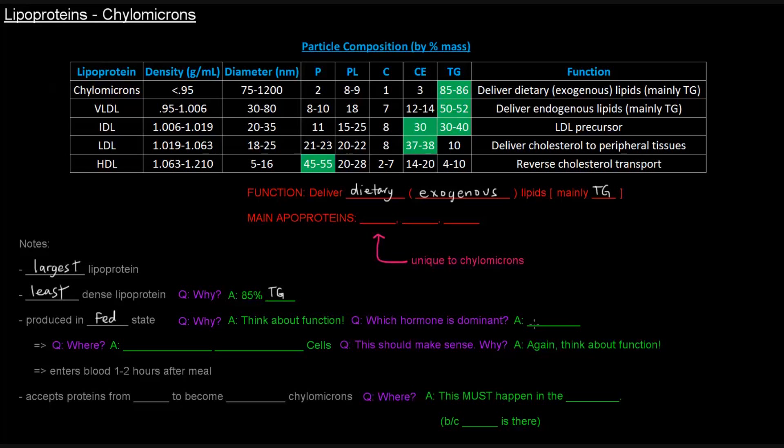Which hormone is dominant during the fed state? Insulin. They're produced in the fed state, but where? They're produced in the intestinal epithelial cells.